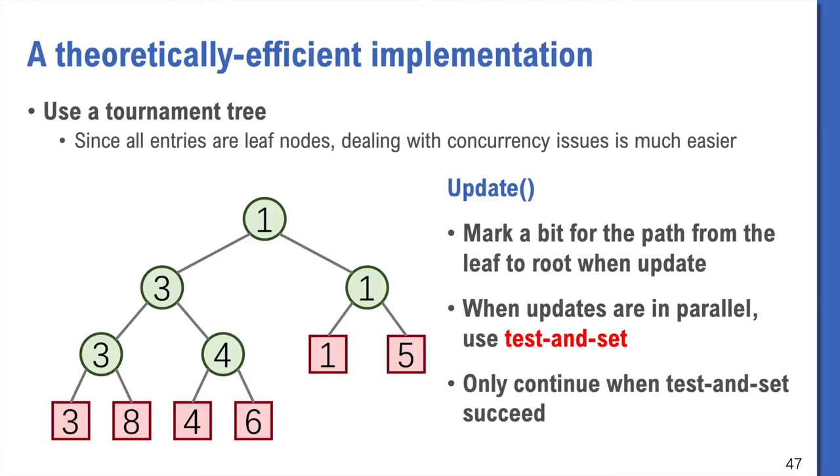For time limit, I will just show our tournament tree-based implementation. Using arrays is actually straightforward. A tournament tree is an implementation of priority queue. It's a complete binary tree with all data stored in the external nodes or leaves. Each internal node records the smaller values of its two children, so it looks like a tournament.